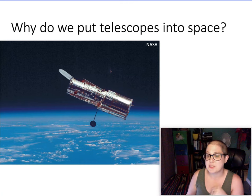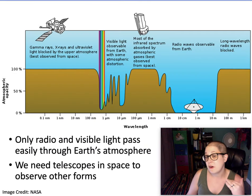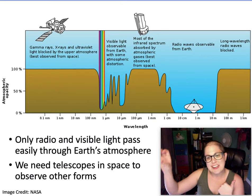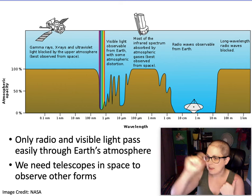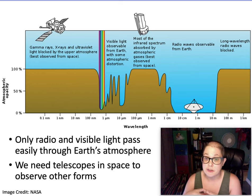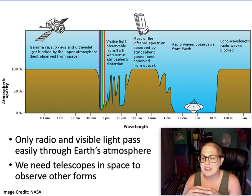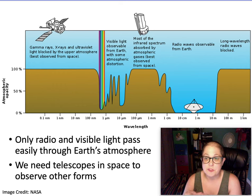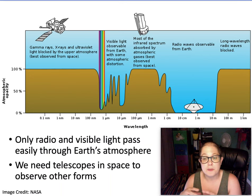We still want to put some telescopes in space because some types of light don't make it through our atmosphere. This shows the electromagnetic spectrum from short wavelengths on the left to long wavelengths on the right. The depth of the dip tells you how transparent the atmosphere is to those types of light. Visible light is mostly observable from the ground — though with some atmospheric distortion — which is why people have been using telescopes for over 400 years.